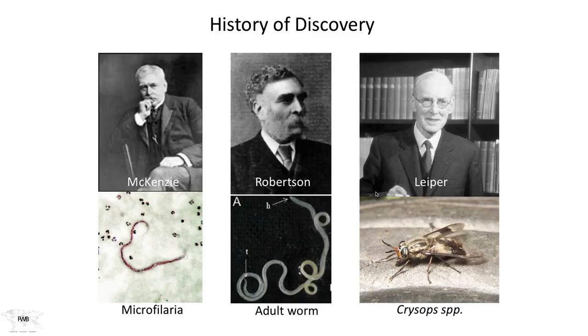So Robertson is given credit for describing both the male and the female loa loa, and McKenzie is given credit for discovering that these are filarial parasites that produce offspring which can be found in the blood. A Brit named Leiper, a very famous parasitologist of his day, described the vector portion of the life cycle. It involves deer flies known as Chrysops — only the ones in West and Central Africa are capable of transmitting this infection to people.